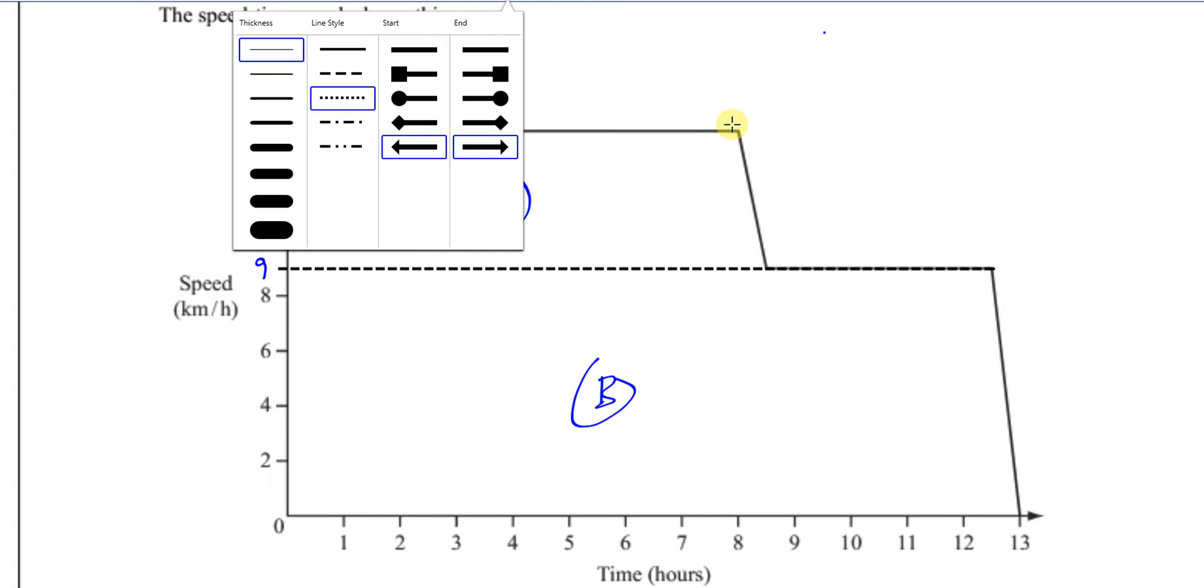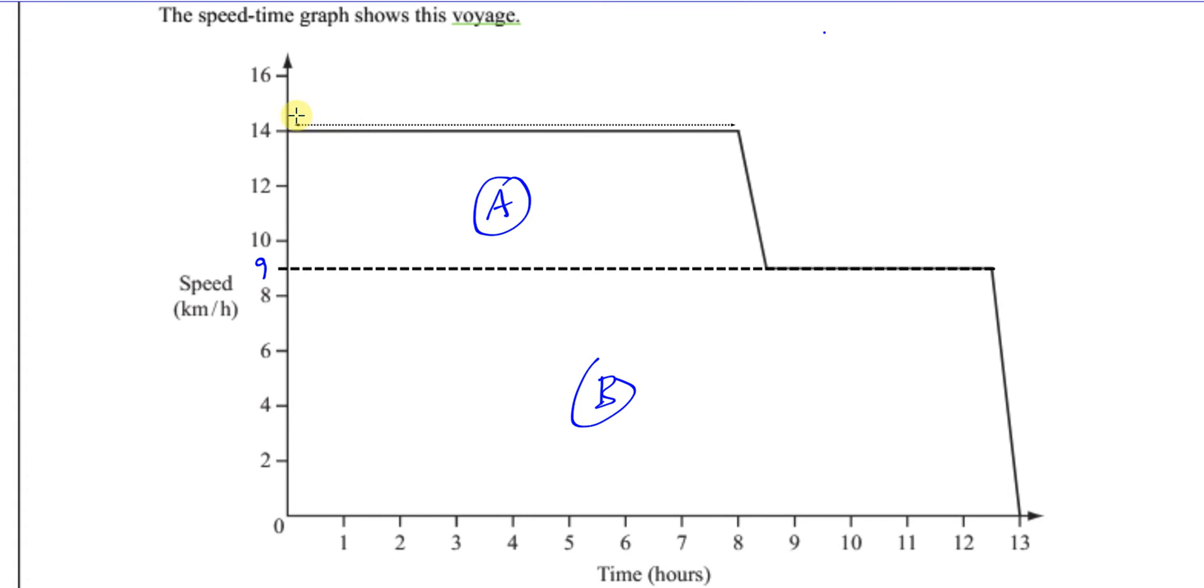This is the parallel side for this, and this is the other parallel side. The length of the parallel sides, the distance between the parallel sides is this length here. For trapezium A, the distance between the parallel sides is 5, and the length of the parallel sides is up to 8 o'clock, so that's 8. And this is 8 and a half hours, that's 8.5.